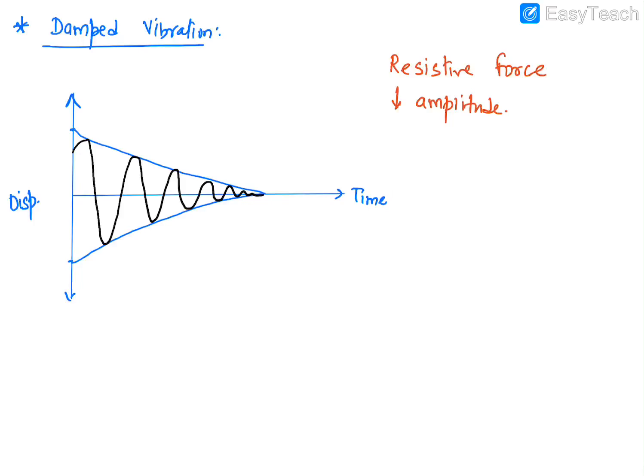Examples of damped vibrations: oscillation of a pendulum in air, a tuning fork vibrating in air, pulling a slim branch of a tree and releasing it, and a spring with a weight attached oscillating and eventually coming to rest.